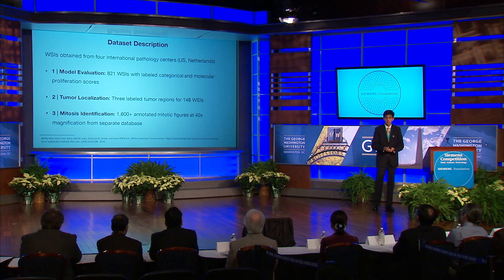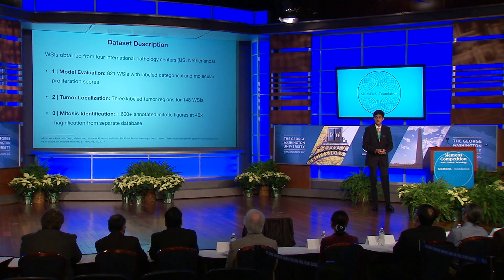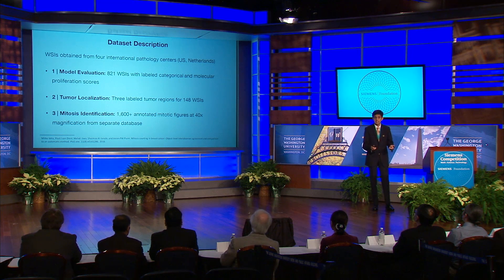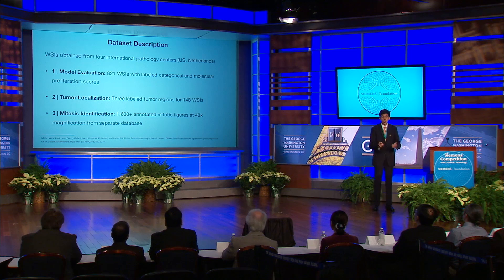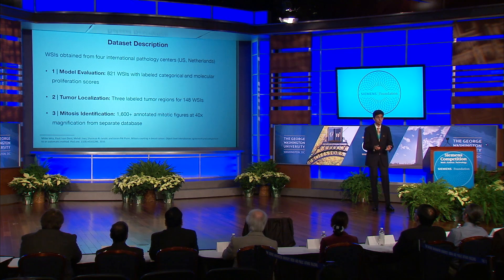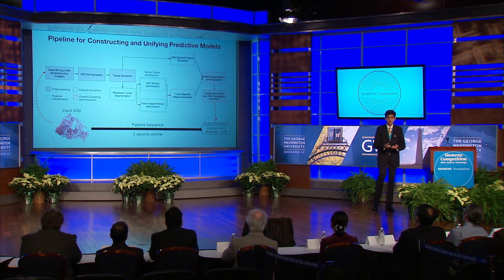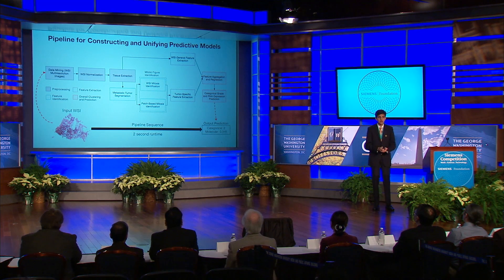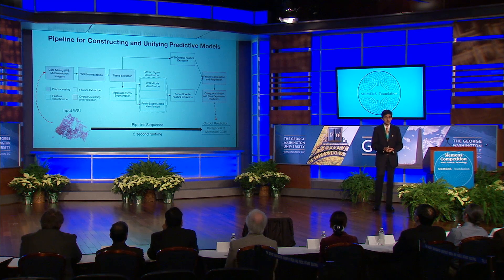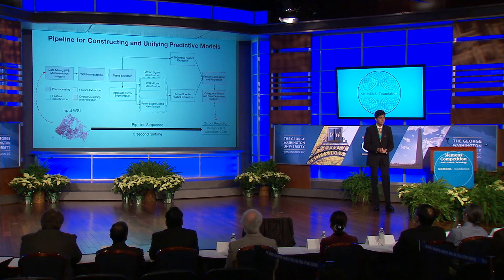In the development of my proposed pipeline, I used three distinct datasets from four international pathology centers. My primary dataset consisted of 821 whole slide images labeled with both categorical and molecular scores. My second and third datasets consisted of supplementary heuristic information used to train intermediate classifiers. A schematic illustration of my overall pipeline is shown here, with four clear-cut steps of preprocessing, feature identification, feature extraction, and overall clustering and prediction. In this talk, I'll delve more deeply into each stage and highlight novel contributions in the process.